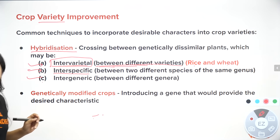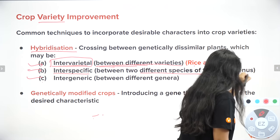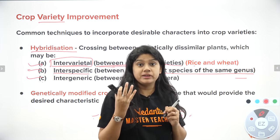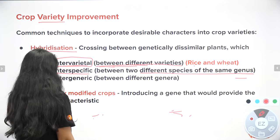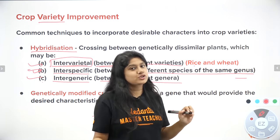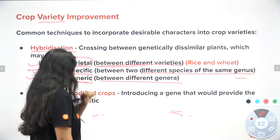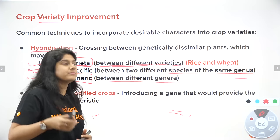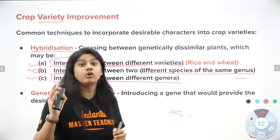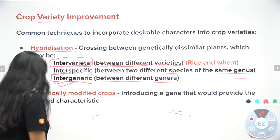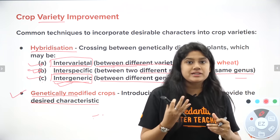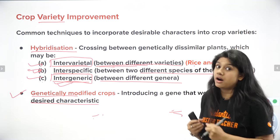The second type is interspecific hybridization: two different species of the same genus — for example, donkey and horse producing a mule. The third type is intergeneric hybridization: between two completely different genera, like a cat and a dog. We also have genetically modified crops where genes are modified to get new species with desired characteristics needed by the environment.